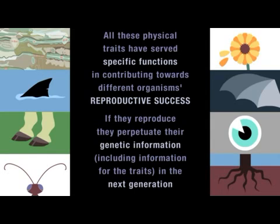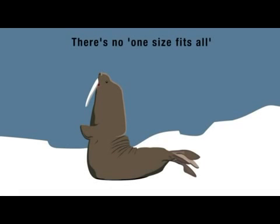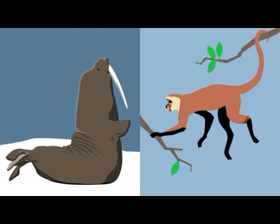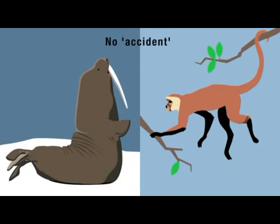But it's not true that every single trait of a living organism must be advantageous. Traits that give no particular advantage can still be favoured if they're associated with other traits that do. When it comes to beneficial traits, there's no one-size-fits-all. Bulk may be a great advantage for a walrus wanting to dominate its rivals, but it would be a distinct disadvantage to a spider monkey that's adapted to a life of swinging nimbly through trees. It's no accident that walruses have evolved to be bulky and spider monkeys have evolved slender, supple limbs — these physical attributes have helped them operate in their respective environments to survive and compete for reproduction.